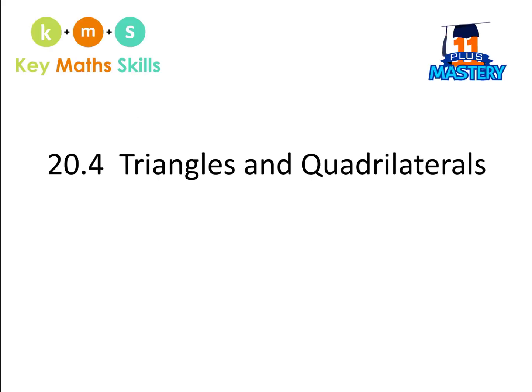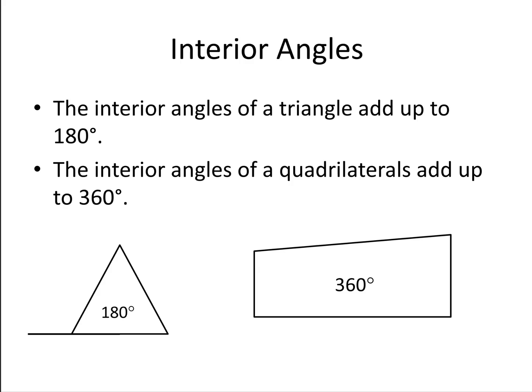Section 4 is triangles and quadrilaterals. The interior angles of a triangle add up to 180 degrees. The interior angles of a quadrilateral add up to 360 degrees. And we can use this to work out missing angles. Let's look at an example.